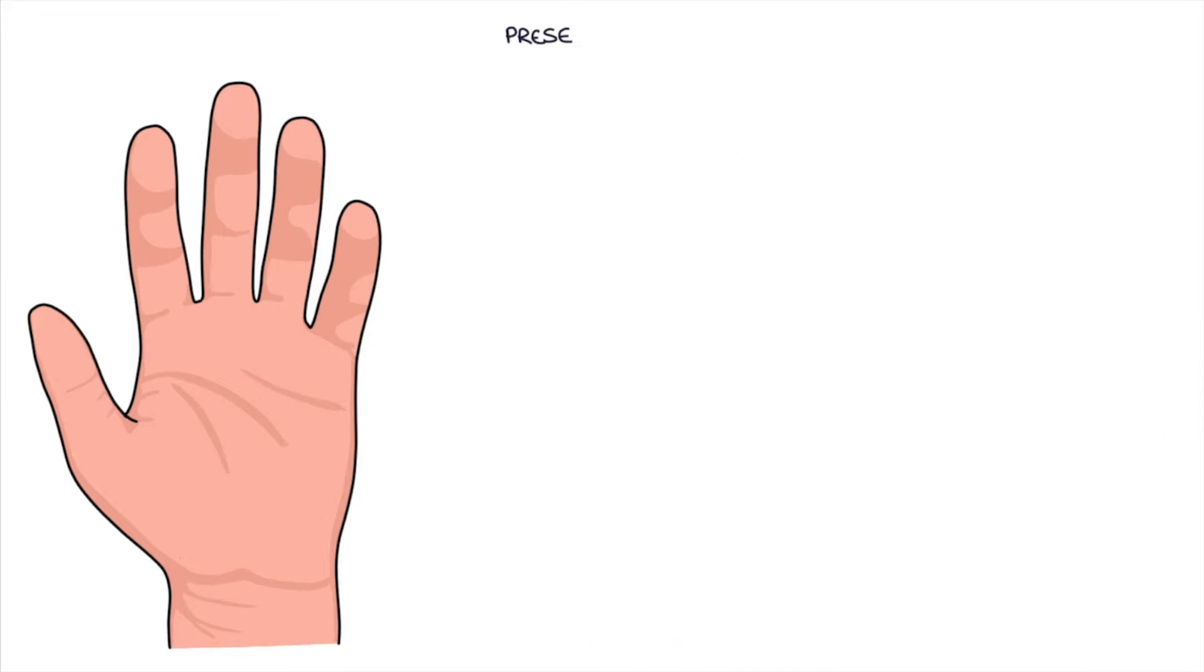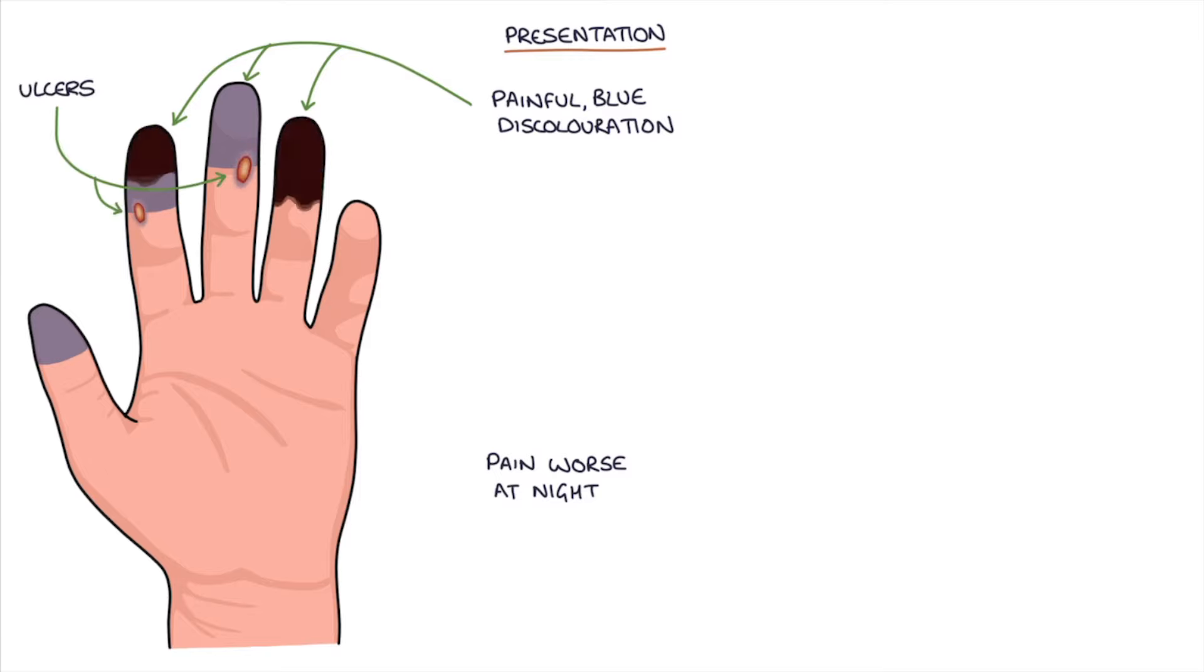Let's talk about the presentation. The typical presenting feature is painful blue discoloration of the fingertips or the tips of the toes. The pain is often worse at night time, and this discoloration may progress to ulcers, gangrene, and amputation of the digits.